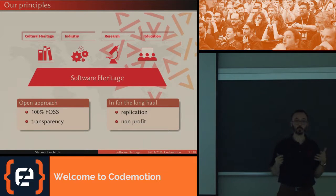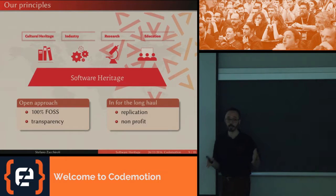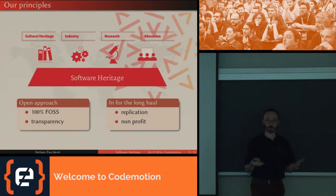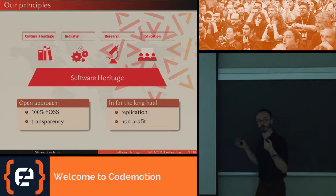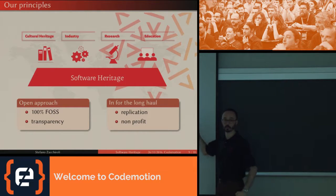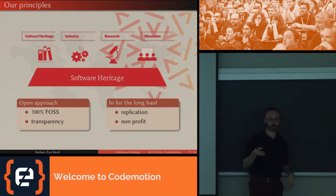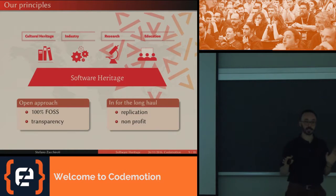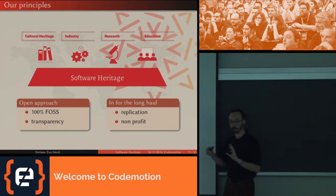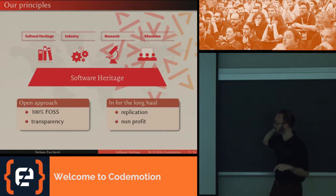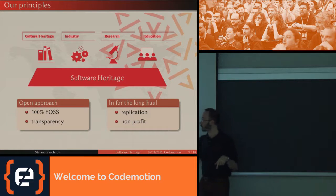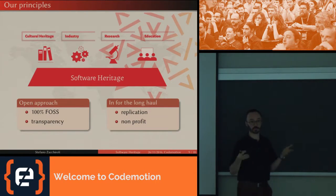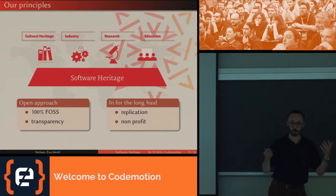The principles we're following to maximize our chances of succeeding — because this is a very challenging mission — are: first, an open approach. Everything we write ourselves to develop this project is free and open source software. For licensing geeks: all the software we write ourselves is copyleft, either GPL or AGPL for the web stuff. It's already publicly available and I'll give you the pointer to the forge in a second. We're also trying to be transparent, running this as a free and open source software project with a development mailing list.